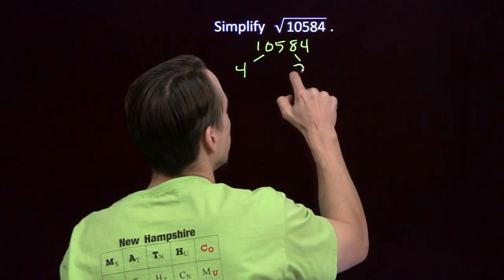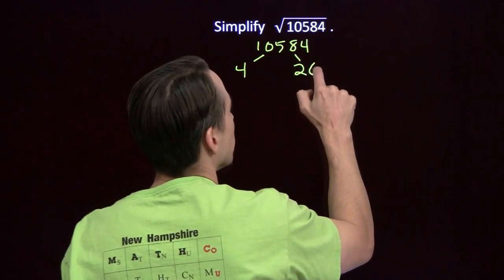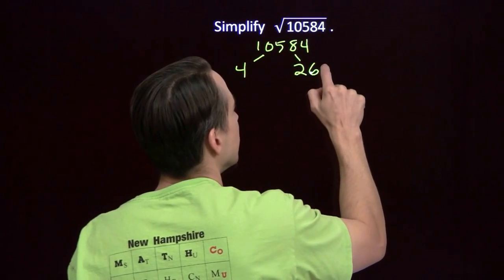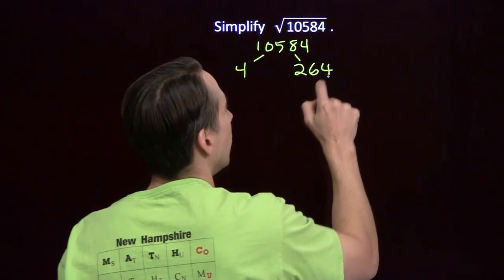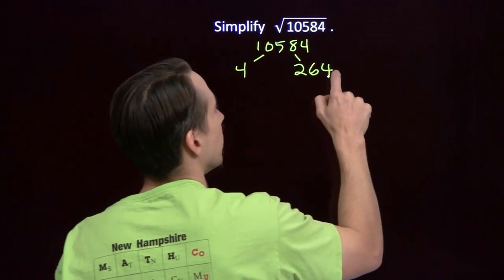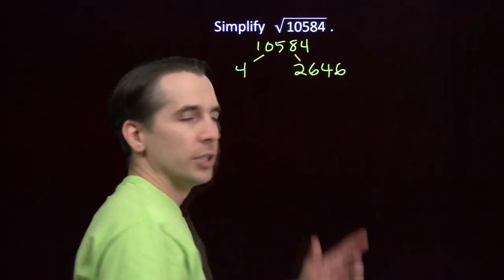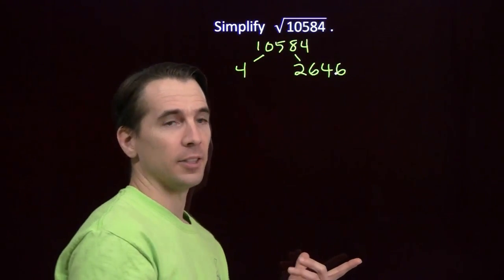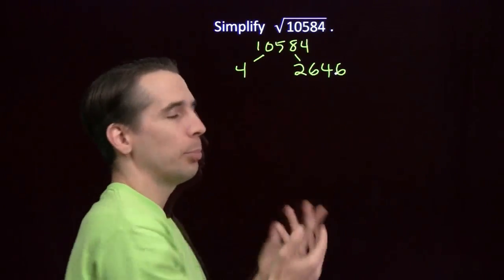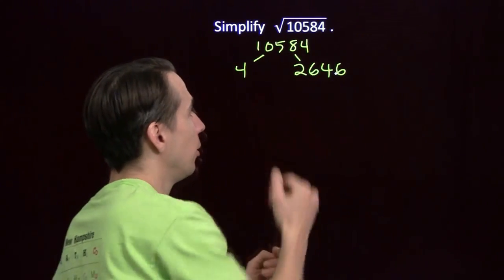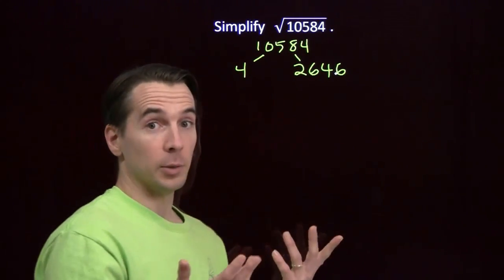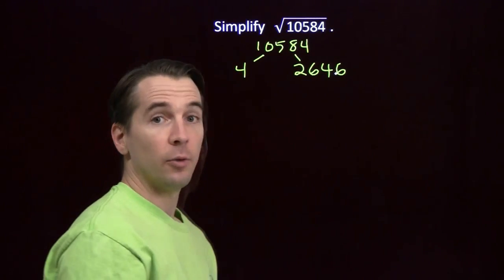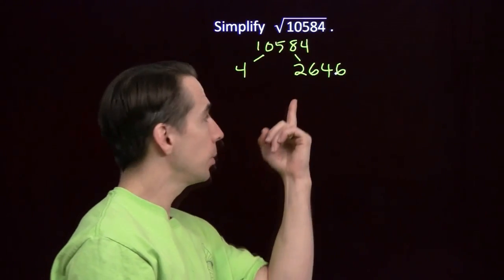4 goes into 10 two times, carry the 2. 4 goes into 25 six times, carry the 1. 4 goes into 18 four times, carry the 2. 4 goes into 24 six times, so we've got 2,646 left. Now we can't pull out another factor of 4 — 46 is divisible by 2 but not by 4, so 2,646 is not divisible by 4.